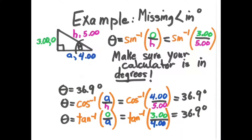Let's go through an example. In the top right-hand corner we have the famous builder triangle: three, four, five. We want to find the angle in the lower right-hand corner. We know it's a right triangle because of the square. First, we find the hypotenuse — the longest side — and label it H. Next, we make a larger arc through the angle of interest, look for the adjacent side and label it A, and lastly look for the opposite side, which we call O.